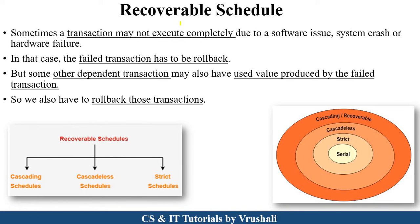The first point is: what exactly is a recoverable schedule? Suppose T1, T2, and T3 are transactions. T2 is dependent on T1, and T3 is again dependent on T2. If T1 transaction fails, then all other dependent transactions also fail. At that time you need to perform the rollback operation using the atomicity property — meaning either a transaction completes successfully or it fails entirely. This is called a recoverable schedule.